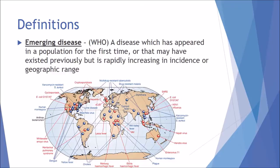An emerging disease, as classified by the World Health Organization, is a disease which has appeared in a population for the first time, or that may have existed previously but is rapidly increasing in incidence or geographic range. This basically means there is a potential pathogen in an area which, if transmitted into a human host by accidental transmission, zoonotic, vector-borne or otherwise, has the potential to cause a widespread devastating outbreak.